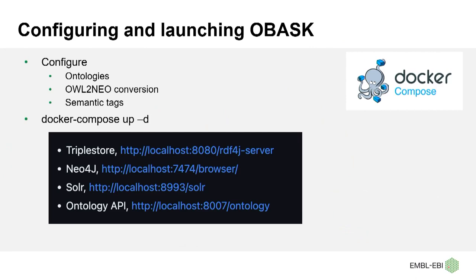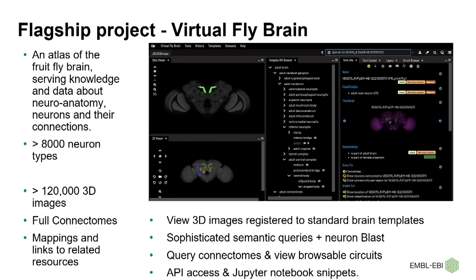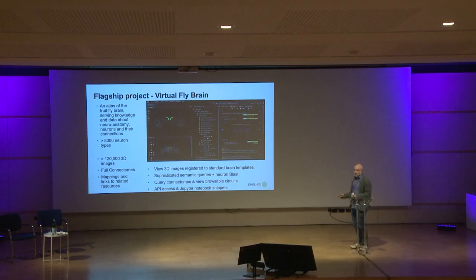The main project I'm going to talk about is the Virtual Fly Brain project. We have over 9,000 neuron types, 120,000 3D images, full connectomes, all in a nice queryable setup.